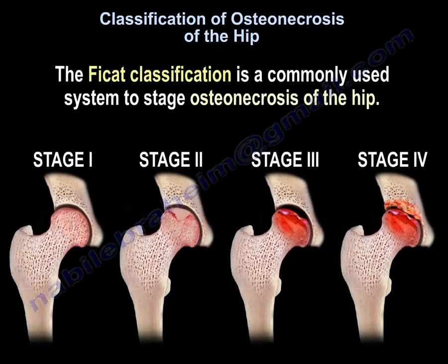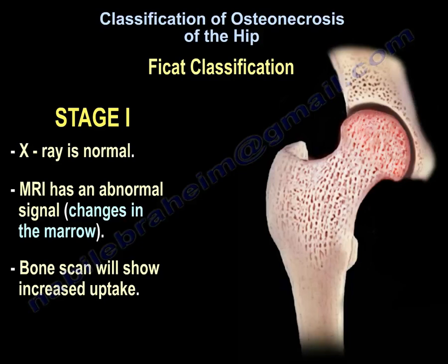Stage one: the x-ray is normal. The MRI has abnormal signal changes in the marrow. Bone scan will show increased uptake.